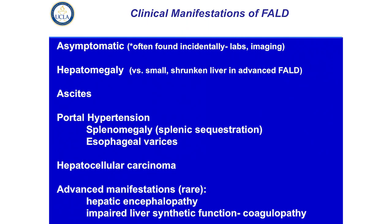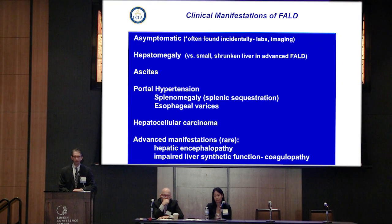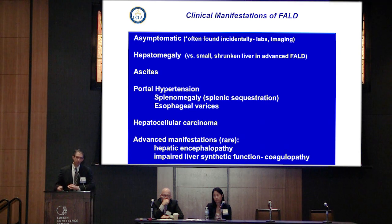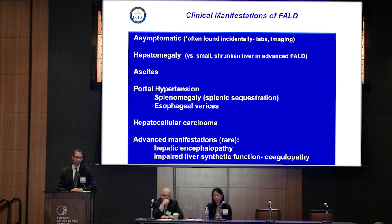The manifestations of Fontan-associated liver disease in children oftentimes are simply labs, maybe hepatomegaly, imaging changes. As we get further out from the Fontan, ascites — and that can be multifactorial with protein-losing enteropathy and a synthetic liver function contributing — portal hypertension, the risk of hepatocellular carcinoma, while fortunately not very prevalent, groups are reporting between one to five percent of adults who've had Fontans being at risk of developing HCC, and then some of the more rare advanced manifestations such as hepatic encephalopathy and impaired synthetic liver function.